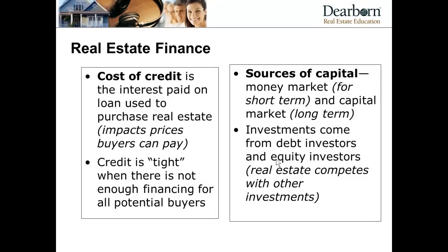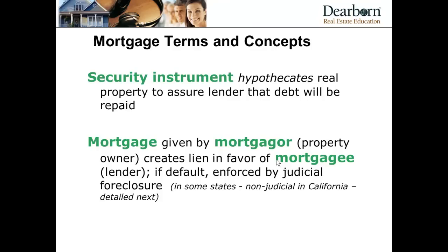Capital markets are the longer-term sources of funding typically used in a residential mortgage. Investments can come from debt investors — they loan money and expect interest back at a lower rate of return because there's less risk — versus equity investors who take a portion of the risk or of the appreciation. The key point is that real estate competes with other investments. An insurance company with large amounts of premium money can look at investing in real estate or in alternative investments, and those factors can also impact real estate prices.